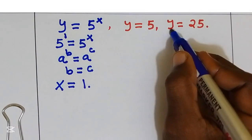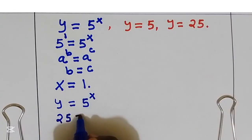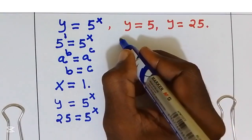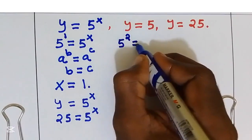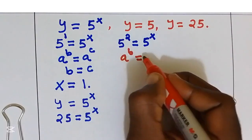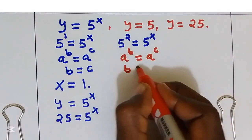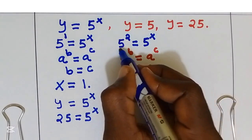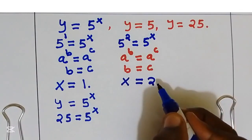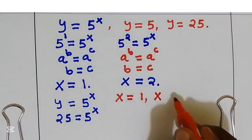Now let's find x when y equals 25. Substituting: 5^x equals 25, and 25 is the same as 5^2. Since the bases are the same, the exponents are equal, so x equals 2. Our two solutions are x equals 1 and x equals 2.